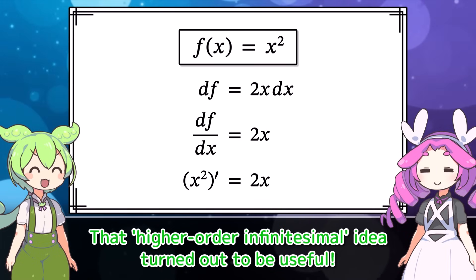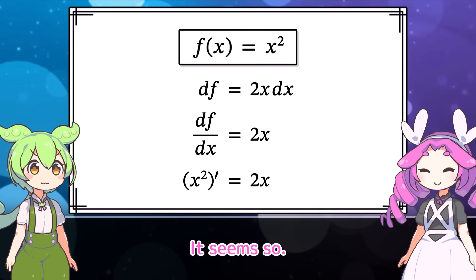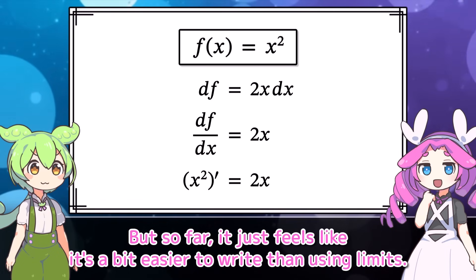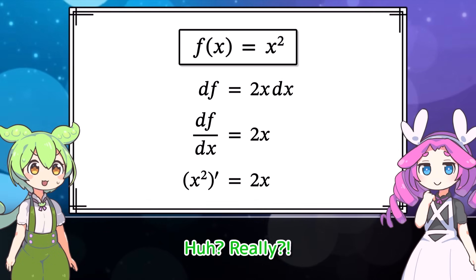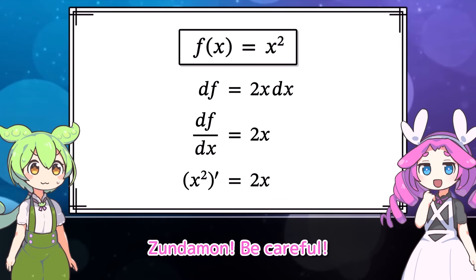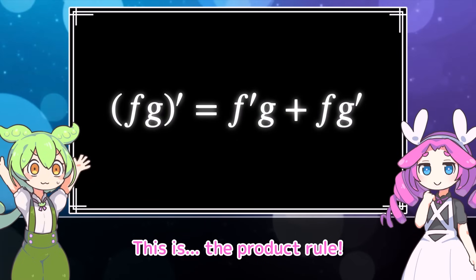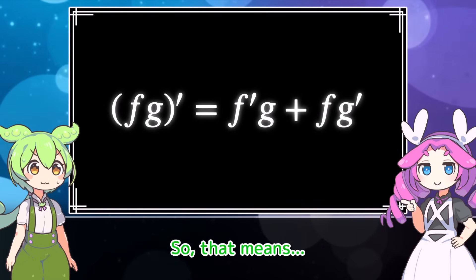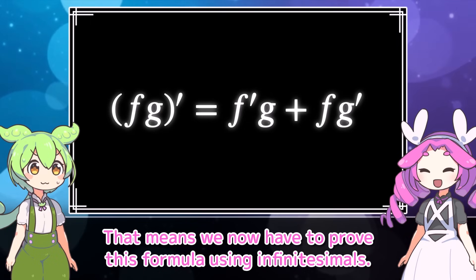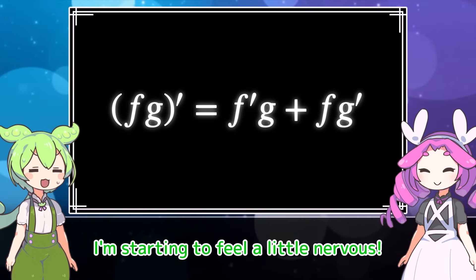Differentiation with infinitesimals — it's strange, but it seems to work out correctly. But so far, it just feels like it's a bit easier to write than using limits. Actually, the true power of infinitesimals probably hasn't shown itself yet. The problem is coming — this is the product rule. When differentiating the product of f and g, you just add the case where f is differentiated to the case where g is differentiated. This is something we use a lot in differentiation. That means we now have to prove this formula using infinitesimals. From here on, the difficulty level rises, so be careful.